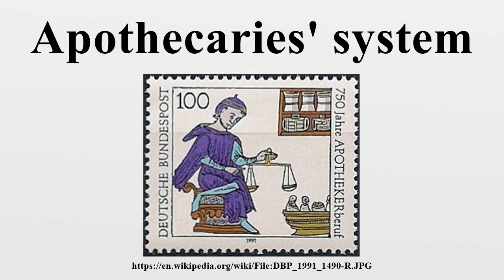This was connected with international commerce, especially with the need to use the standards of the target market and to compensate for a common weighing practice that caused a difference between actual and nominal weight. In the 19th century, most European countries or cities still had at least a commercial or civil system for general trading, and a second system for precious metals such as gold and silver. The system for precious metals was usually divided in a different way from the commercial system, often using special units such as the carat.